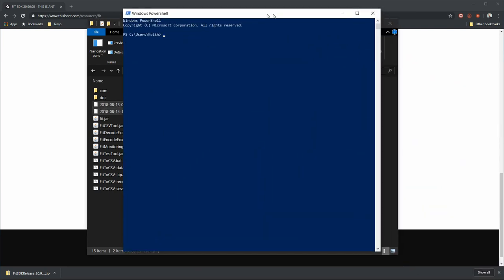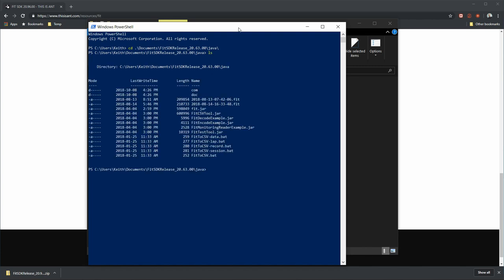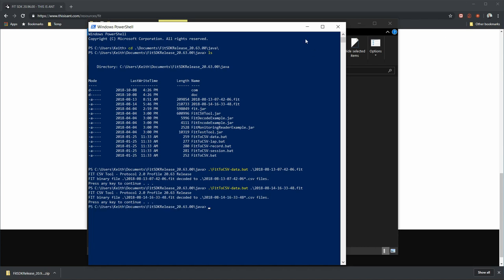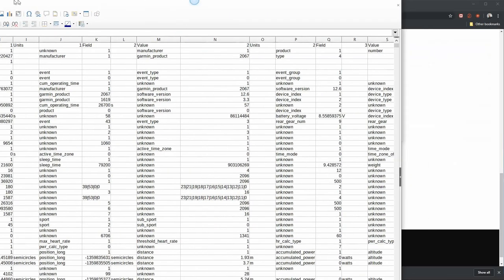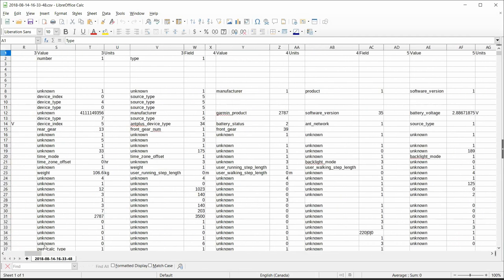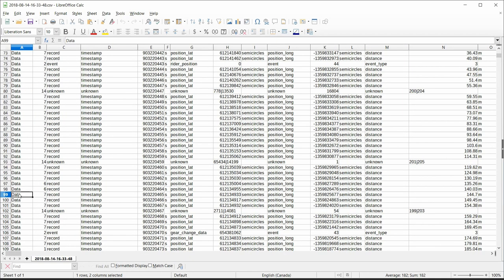And once you have that, you extract it and navigate to the Java folder. Put your fit files in here. And we're going to go to the command line. There's a few different batch files in here. But the one we want is actually the Fit to CSV dot dash data. So we have to convert them one at a time. And I'll show you what that data does that's different than the regular Fit to CSV. I'll just convert that other file.